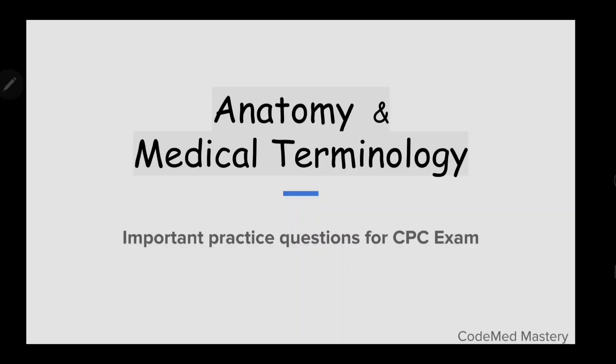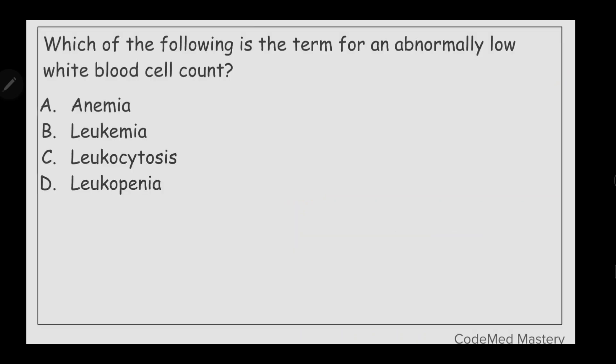Hi everyone, today we'll be diving into the important repeated questions of anatomy and medical terminology. Let's start with the first question: which of the following is the term for an abnormally low white blood cell count? Option A: anemia,